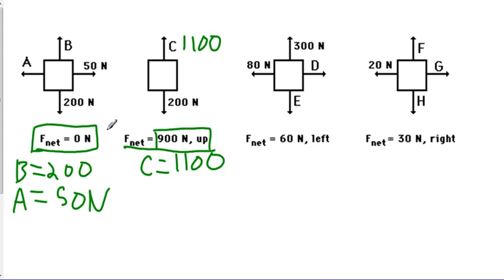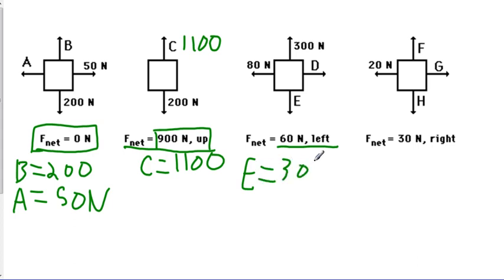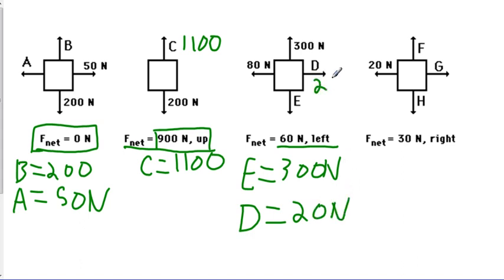Remember, the net force is the total — the sum of all forces. In the next example, we have 300 newtons going up, 80 newtons going to the left, and vectors E and D. The net force is 60 newtons going left, meaning no net force in the vertical direction. So vector E equals 300 newtons. Since the net force is 60 newtons left and we have 80 newtons left, vector D must be 20 newtons to the right — subtracting 20 from 80 gives us 60 newtons to the left.